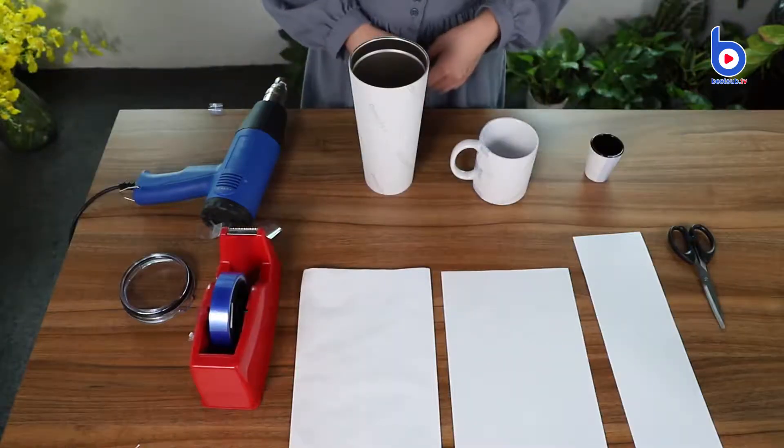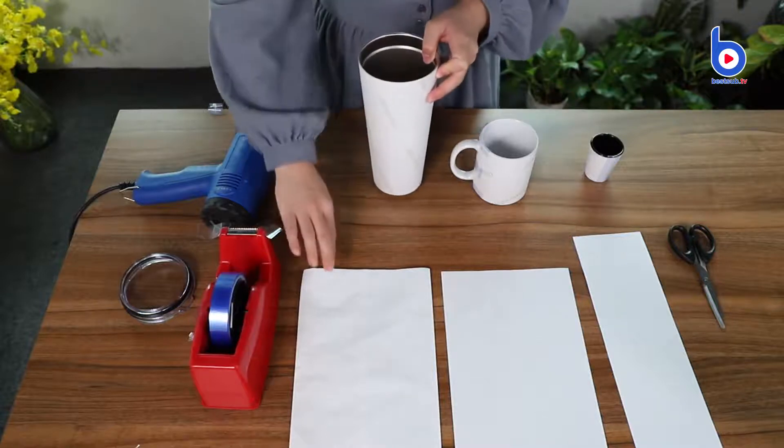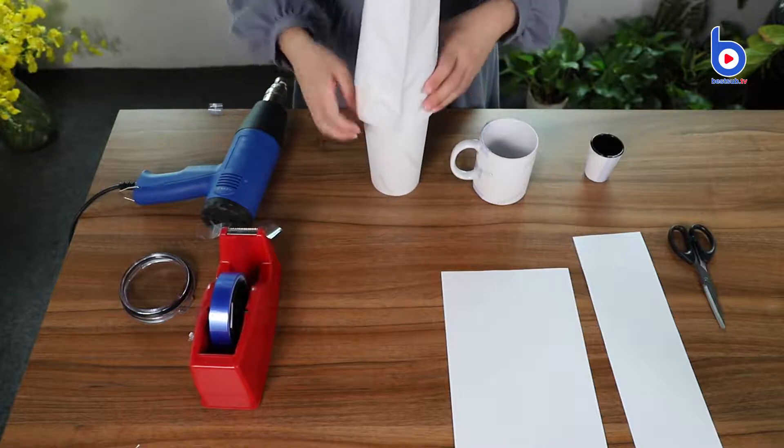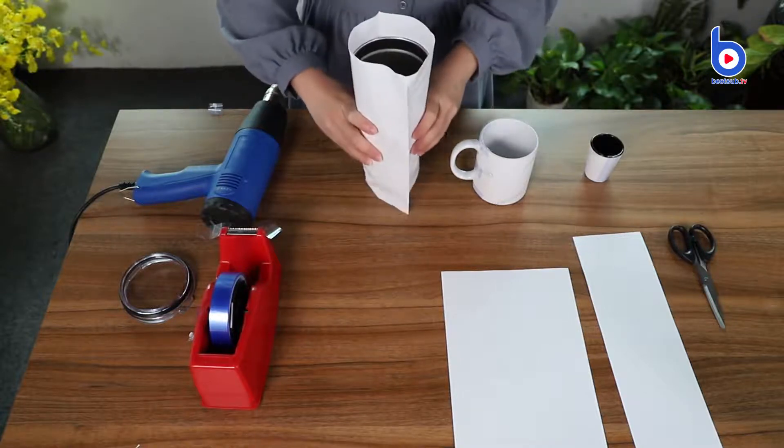Now it's time for the shrink film. For the large tumbler, I just need to place the shrink film around it.